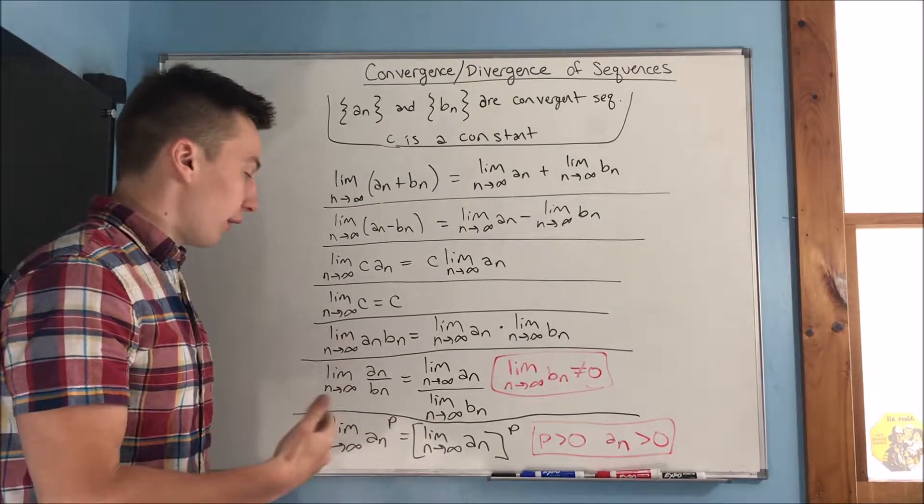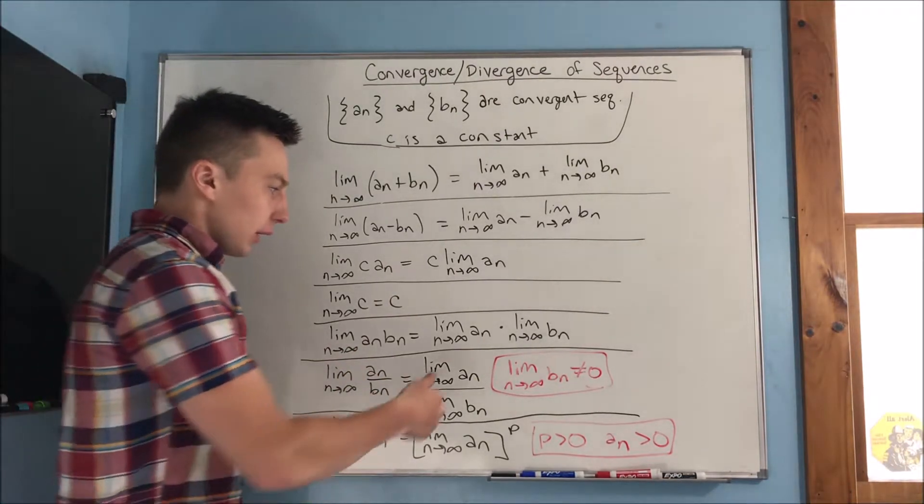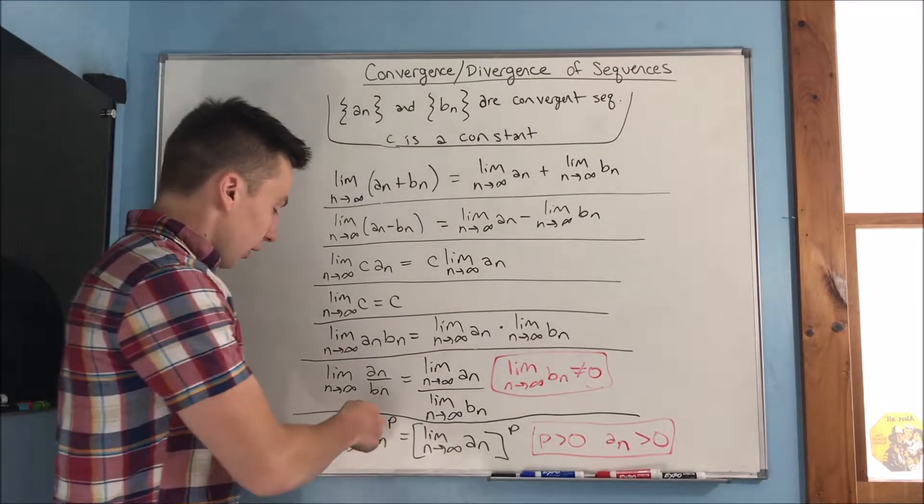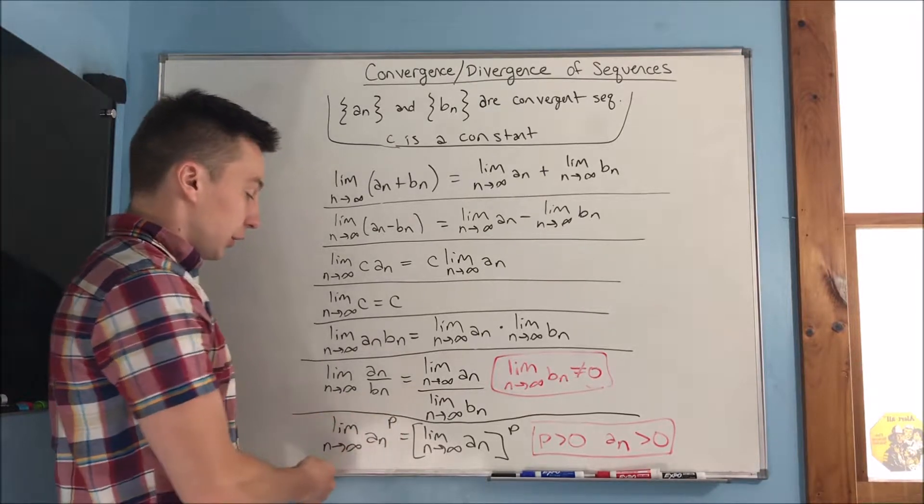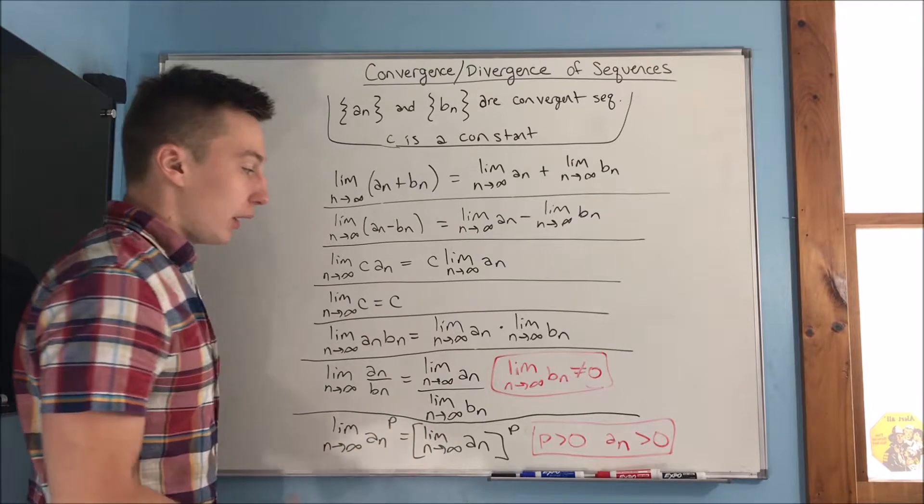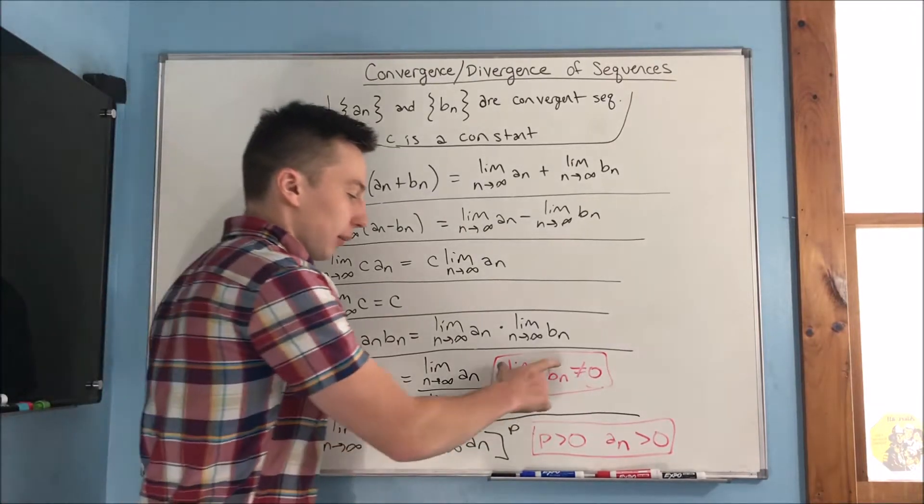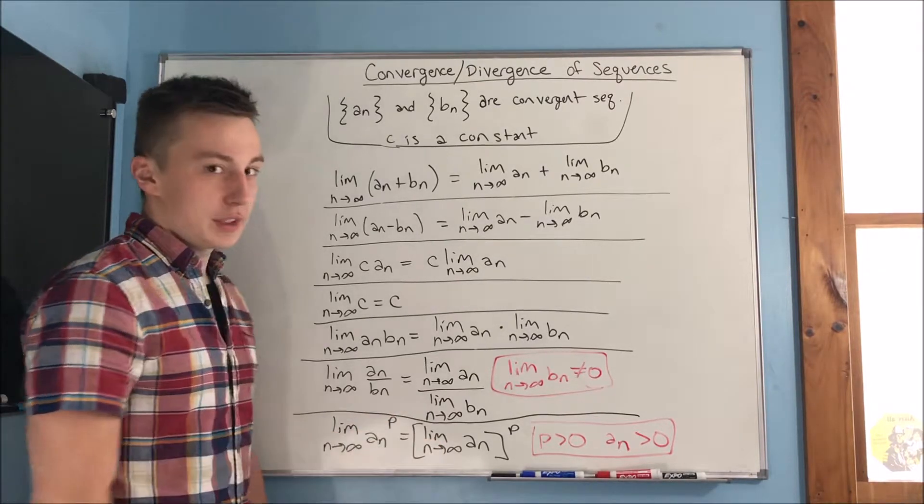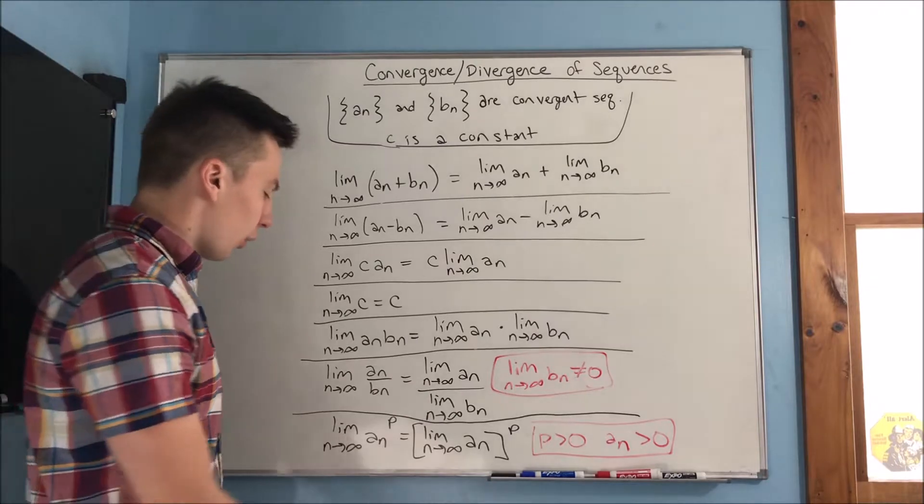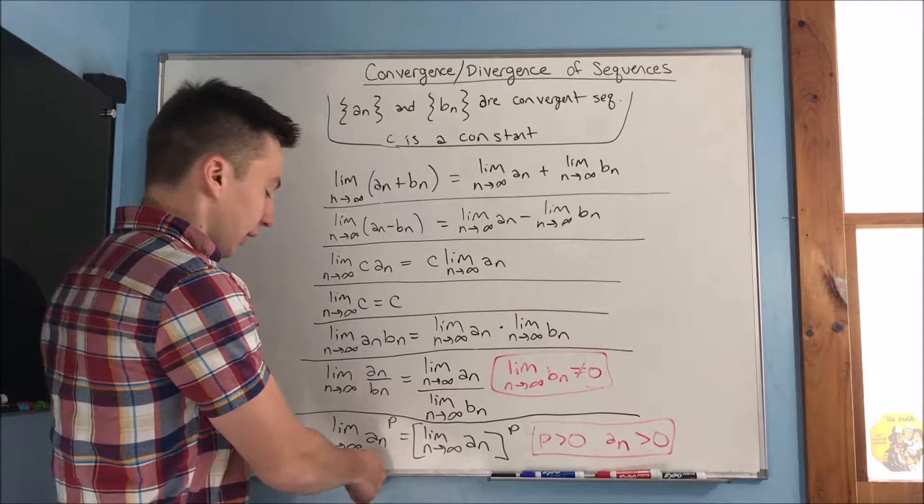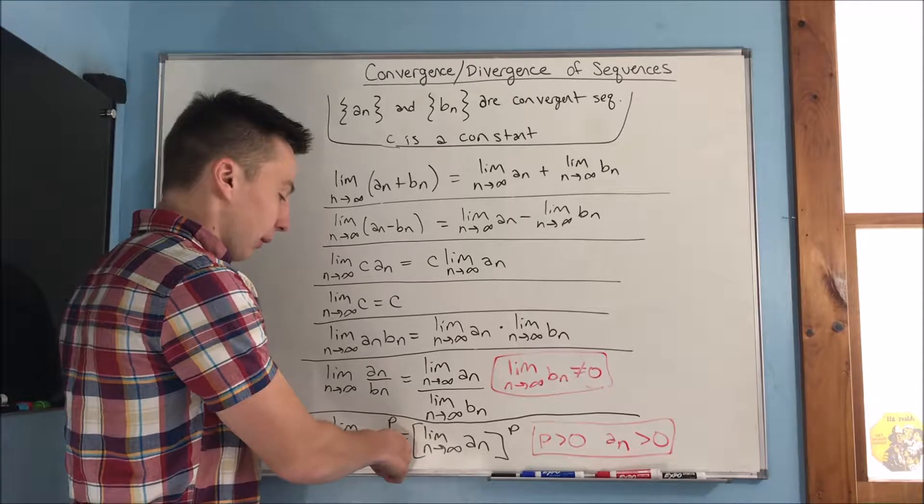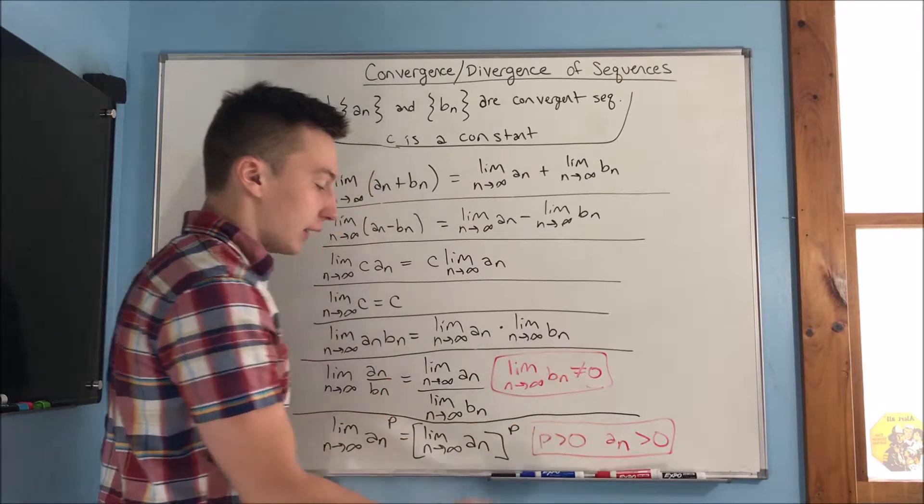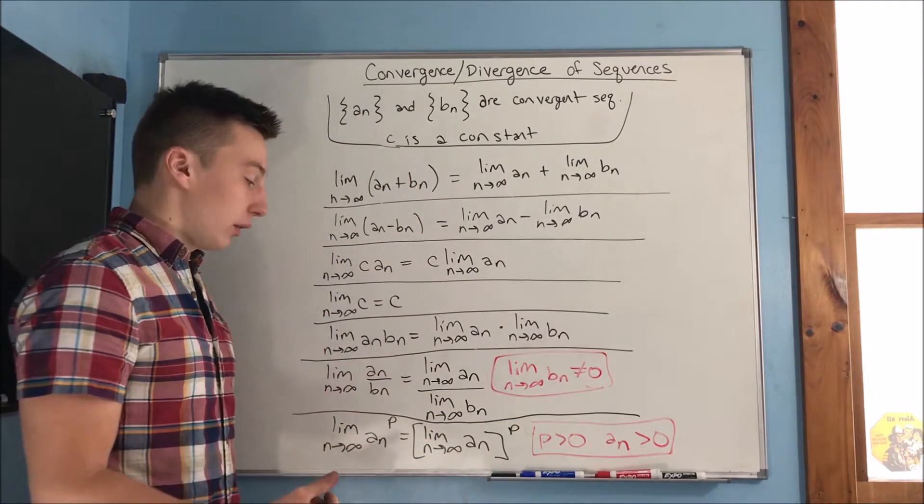As far as the limit as n approaches infinity of a sub n, b sub n goes, well, you can just separate those and multiply them together into each limit. The limit as n approaches infinity of two sequences being divided, you can also break that apart, and of course, you can't have the limit as n approaches infinity of b sub n equals zero, because then you have a mess, then you have zero in the denominator, you can't have that. And of course, if you have the limit to have an exponent on the sequence, well, you can pull that exponent up, providing that your exponent is greater than zero, and a sub n is greater than zero as well.